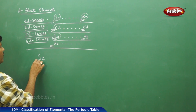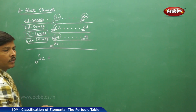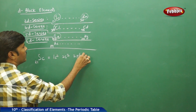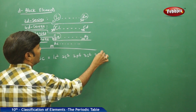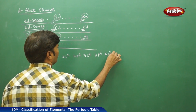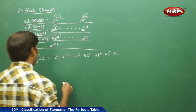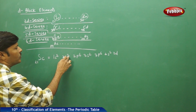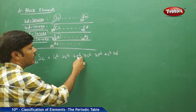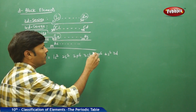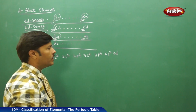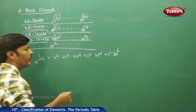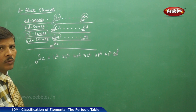Scandium has atomic number 21. Writing its electronic configuration: 1s2, 2s2, 2p6, 3s2, 3p6, 4s2, 3d... We fill up: 2+2=4, 4+6=10, 10+2=12, 12+6=18, 18+2=20, and the 21st electron enters into the 3d orbital.